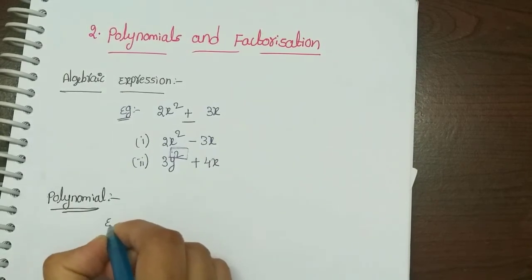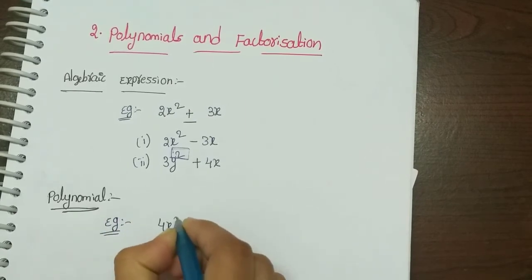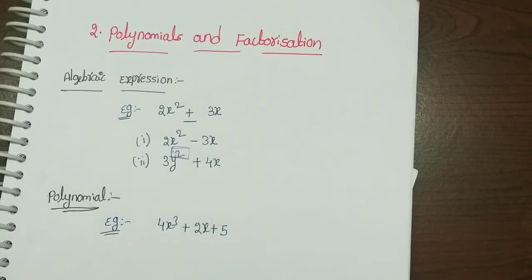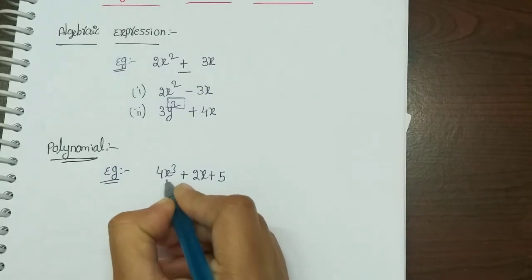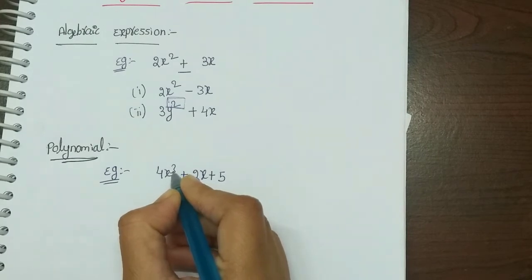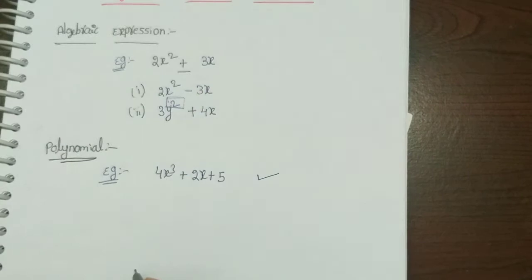Let's take an example: 4x cubed plus 2x plus 5. Here x is a variable. The variable's power is only a positive value — 3 is a positive value. So this is a polynomial.